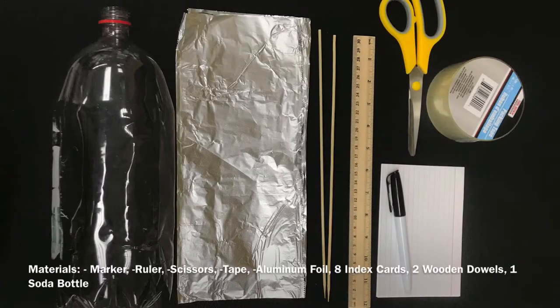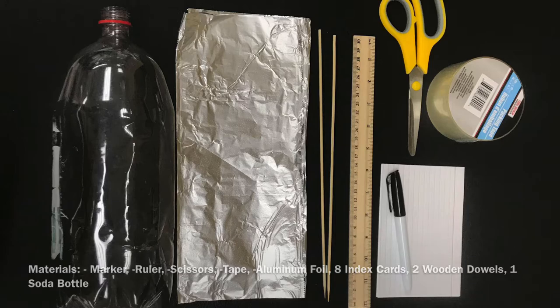For this activity you will need a pair of scissors, some tape, a marker, eight index cards, a ruler, two wooden dowels, two pieces of tinfoil, and one plastic two liter bottle. We provided all these materials for you except for the plastic two liter bottle. You'll need to get that yourself.